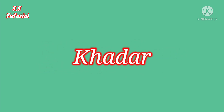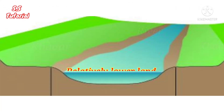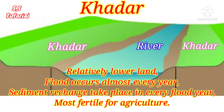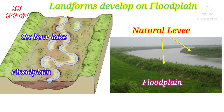Khadar is nothing but a lower flood plain area where flooding occurs almost every year. In other words, it is a flood prone area where every year new sediment recharge takes place. It is the most fertile land for agriculture. In Punjab, Khadar is known as Bait. Most characteristic landforms like oxbow lake and natural levee are found on flood plains, which you will know about in another video.